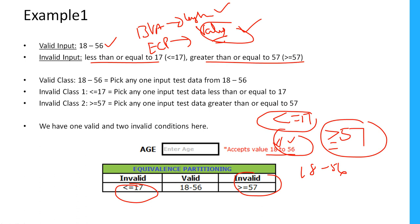The valid class is only 18 to 56, so pick any one input test data from 18 to 56. That will be the valid input.